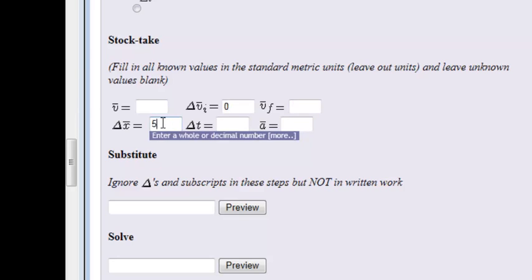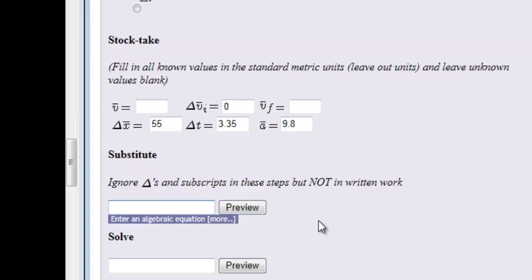In this step, change in displacement is 55, delta t is 3.35, acceleration is 9.8. So you see we didn't use acceleration in this question, but still put it in there anyways just because you do know what the value is.